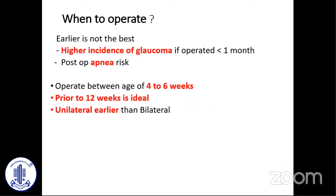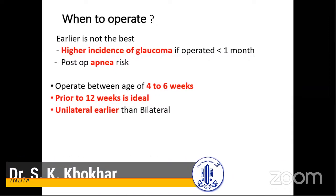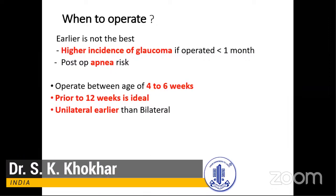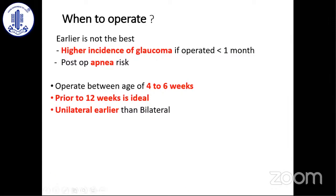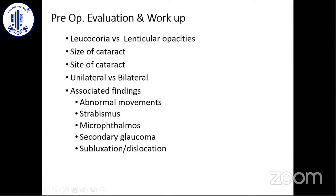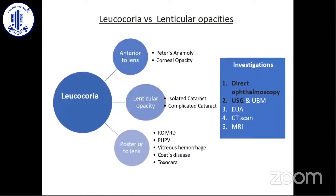If you operate very early — less than one month — there are high chances of glaucoma later on and a high risk of apnea in these patients. The ideal age is about 12 weeks, and unilateral cases should be operated a little bit earlier than bilateral.